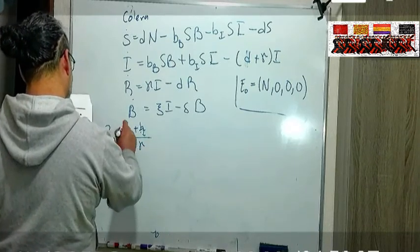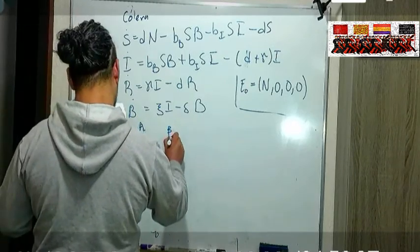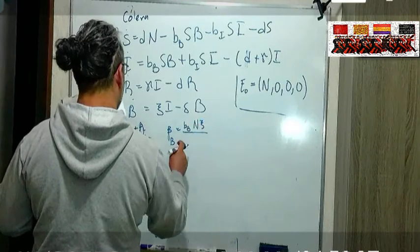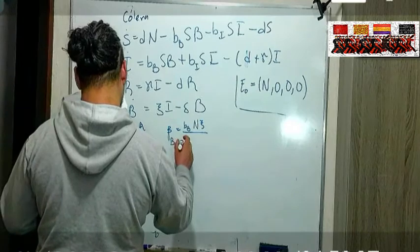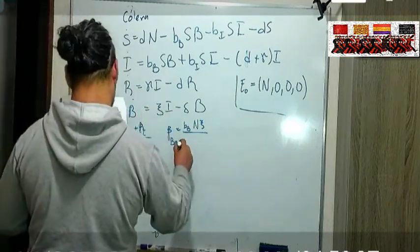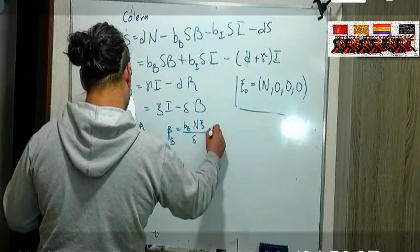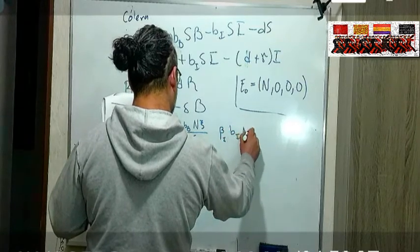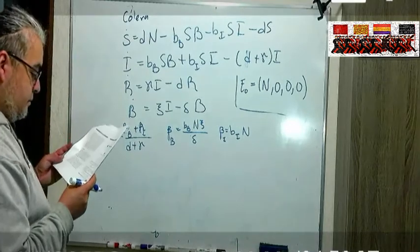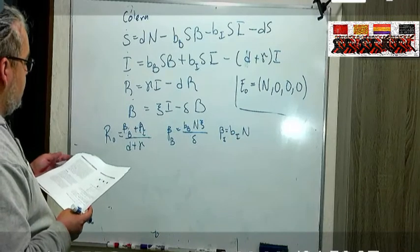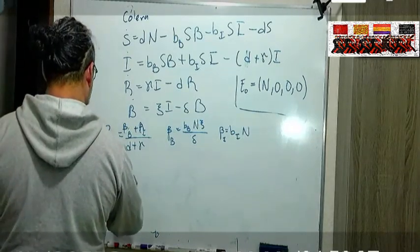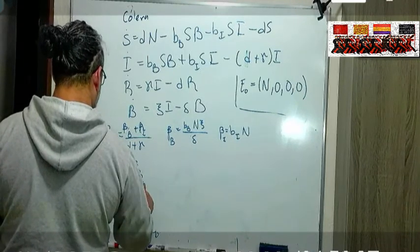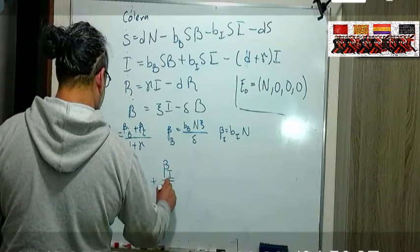Este no es una beta aquí y estas betas, beta B es la BB por la población total por la XI, la XI de nuevos infectados, son las que proliferan en los infectados, los bacterias que proliferan en los infectados sobre delta. Y la beta I es BI por la población completa.